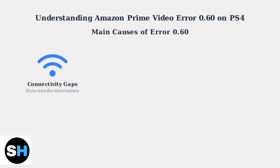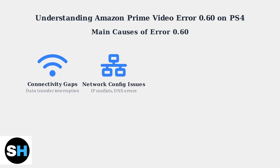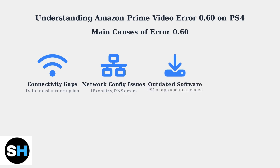There are four main causes of Error 0.60. First, connectivity gaps occur when data transfer between your device and Amazon servers is interrupted. Second, network configuration issues like IP address conflicts or incorrect DNS settings can prevent proper communication with streaming servers. Third, outdated software on either your PlayStation 4 system or the Prime Video app can create compatibility issues that trigger this error.